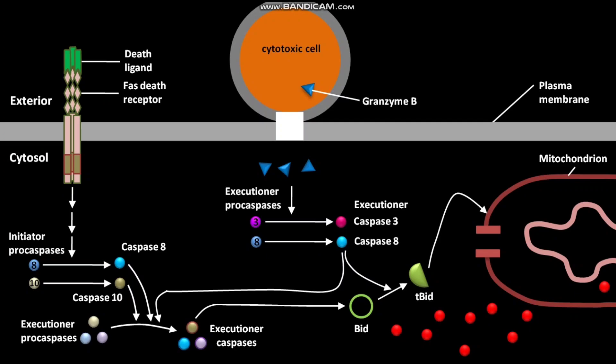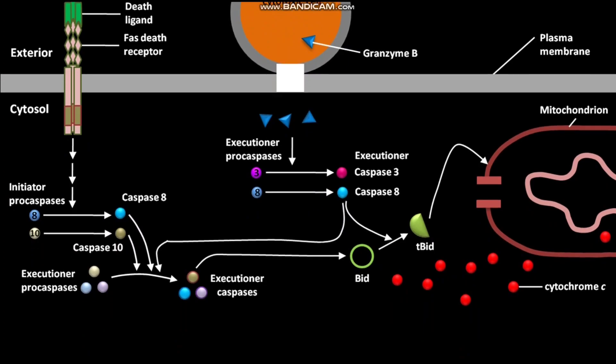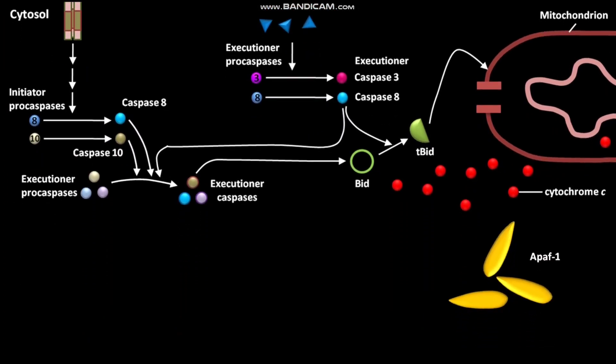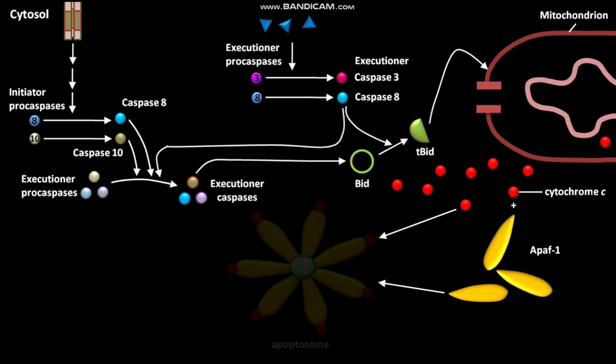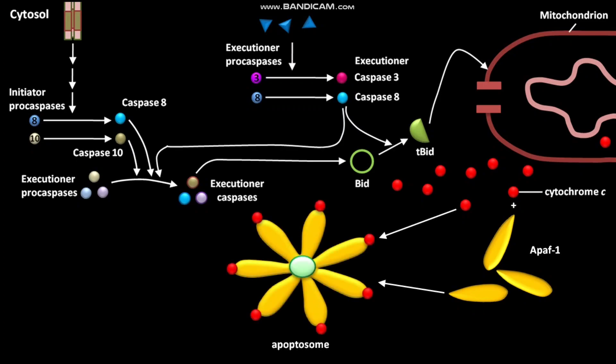This is cytochrome C. Another cytosolic protein called Apaf-1 then combines with cytosolic cytochrome C and eventually forms a heptameric apoptosome. The apoptosome has caspase-9 at its center.